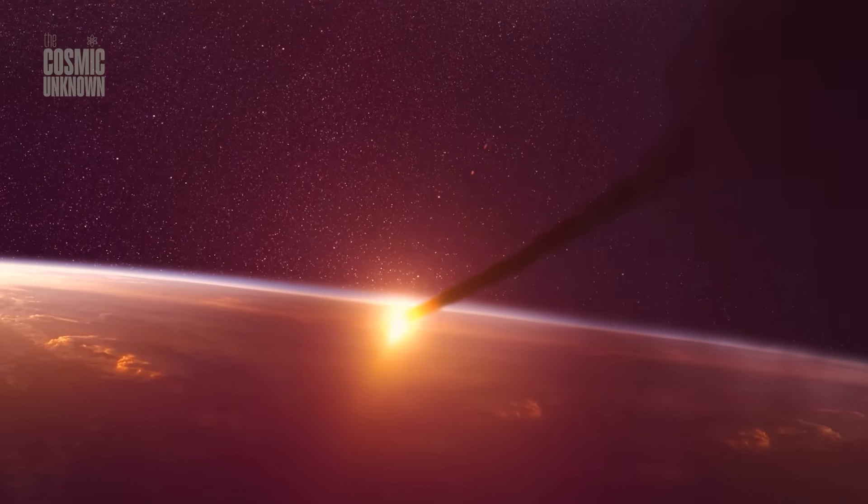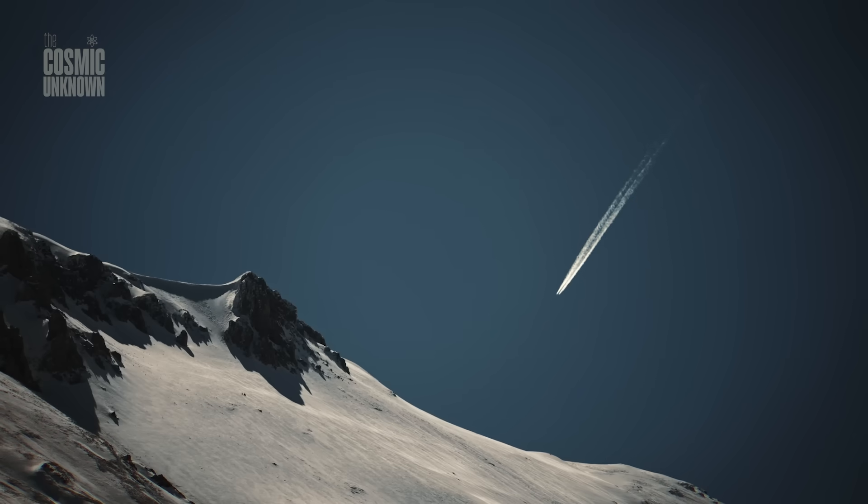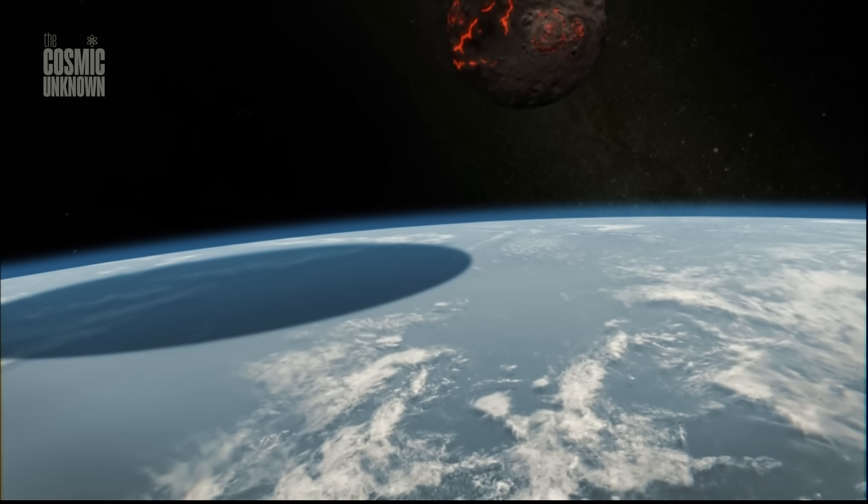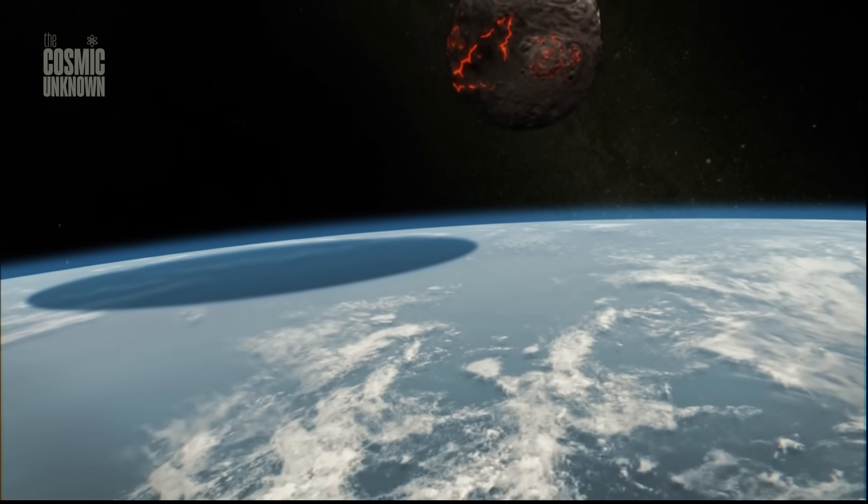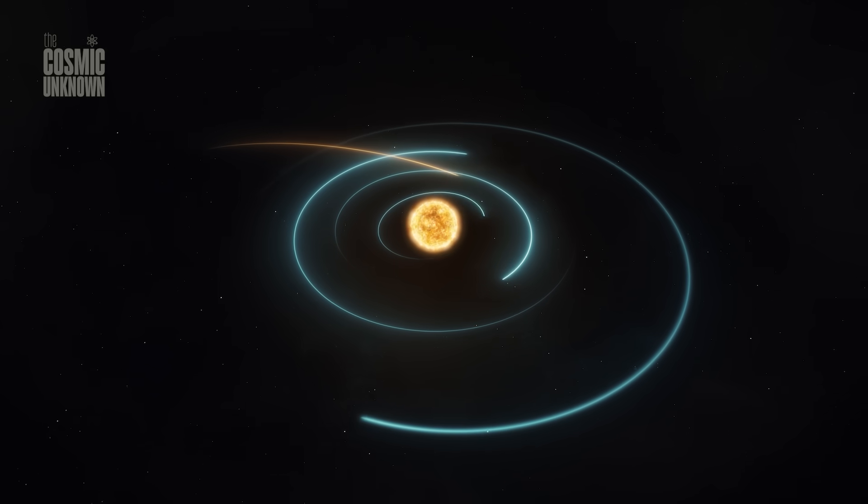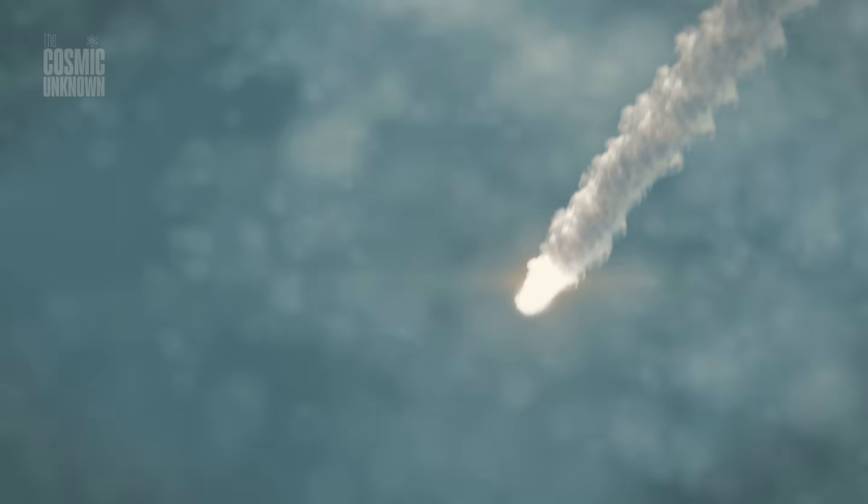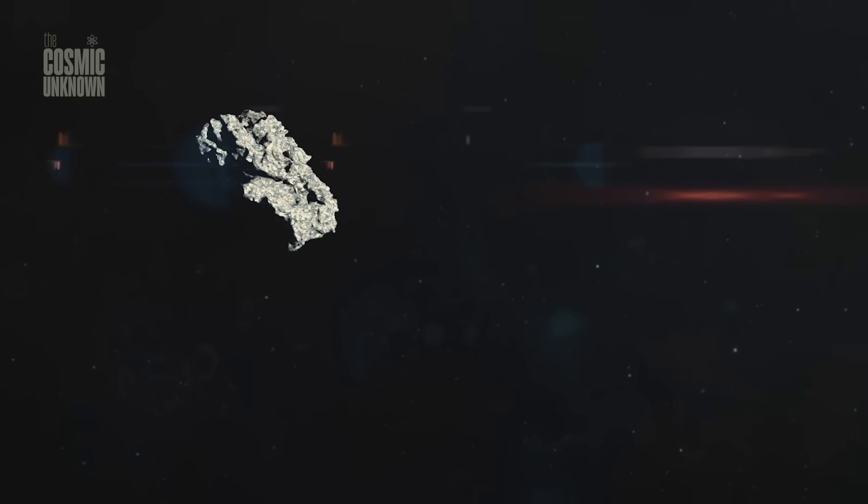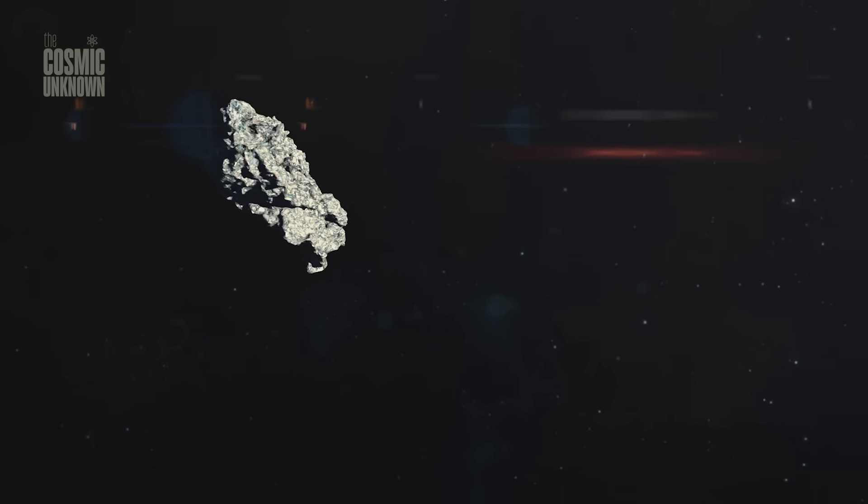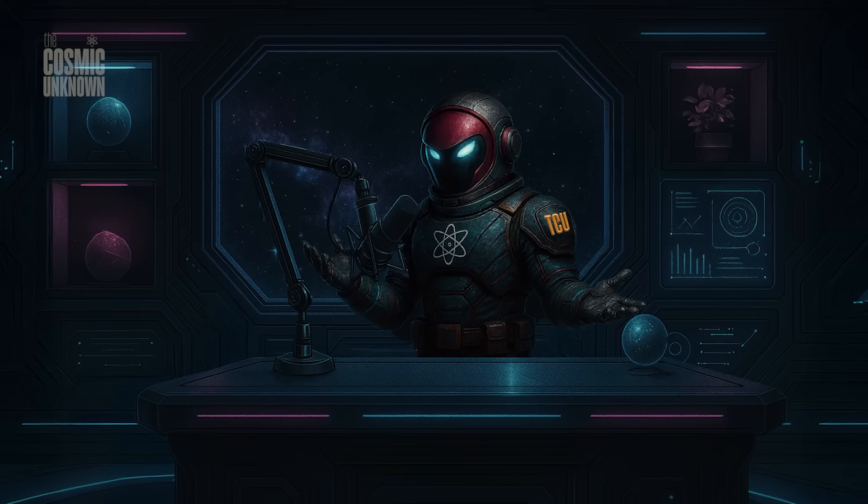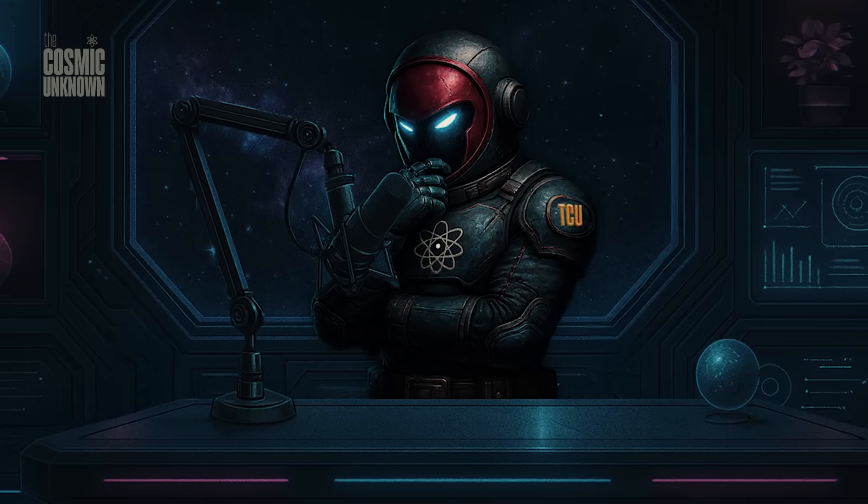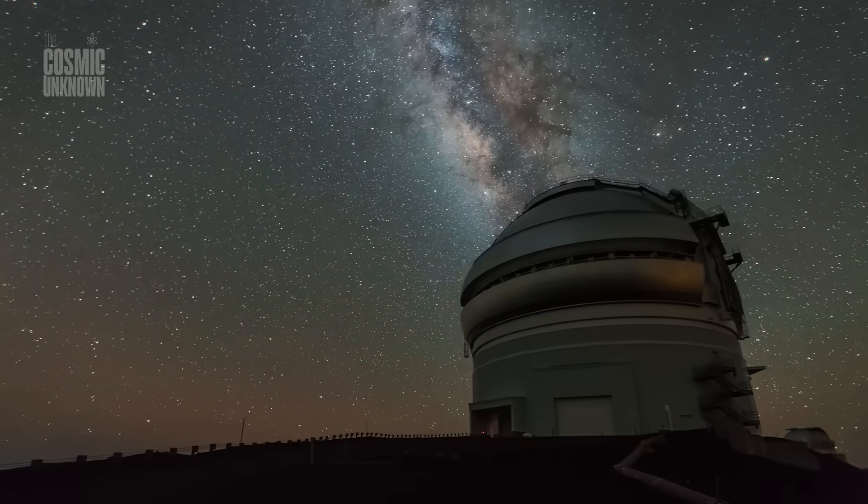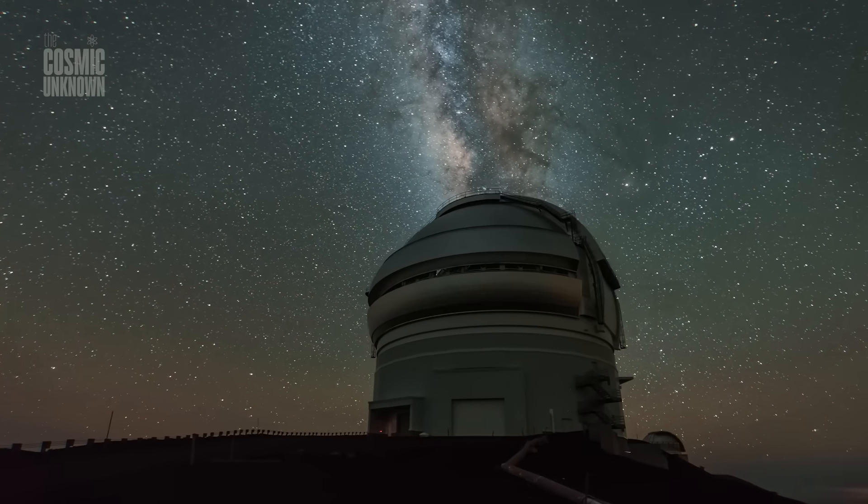And we're left with questions. About time and distance and how much we still don't see. How much might be passing overhead right now, unseen. Maybe R2 SWAN is just ice and dust, a visitor from the past crumbling quietly into space. Or maybe, like the others, it's something more. A small reminder that the universe still holds secrets. That even now, in an age of satellites and sensors, we're still vulnerable to wonder.